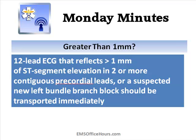If you have a patient you suspect is having an MI with chest pain, and their 12-lead reflects greater than or equal to 1 mm of ST segment elevation, or even a new left bundle branch block, you want to see that ST elevation in two or more contiguous leads. If you see that — greater than 1 mm in two or more contiguous leads, or a new left bundle branch block — you need to get these patients to the hospital immediately. They've got an MI going on and need more intervention than we can provide in the field.